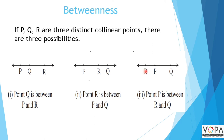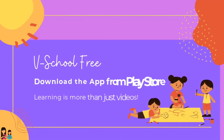If R is in between P and Q, then PR plus RQ equals PQ. If Q is in between P and R, then PQ plus QR equals PR. These segment addition relationships follow from the betweenness property of collinear points.